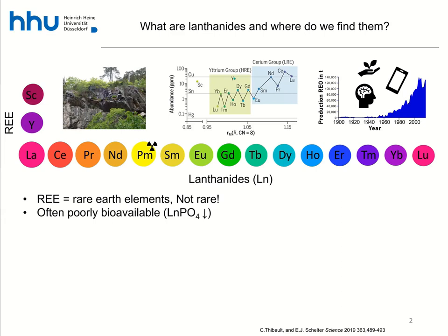Because we need these elements for so many different technological applications, demand is steadily growing. We're now at over 140,000 tons of rare earth oxide production per year. For example, neodymium is used in the hard drive magnets of our computers and phones.